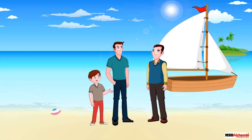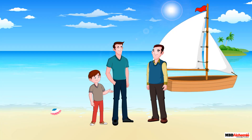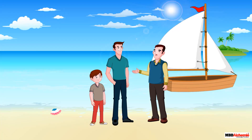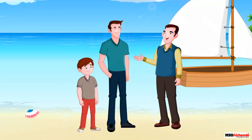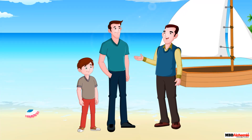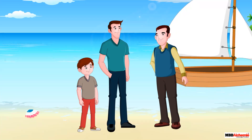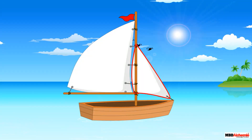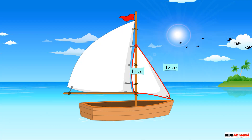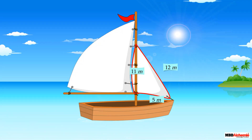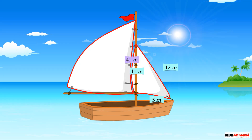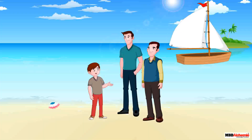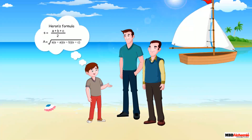Sid asks David to tell him the dimensions of the sails. David says that last year he had the sails serviced, and the dimensions are written on the bill. The dimensions for the smallest sail are 12 meters, 11 meters, and 5 meters. The dimensions for the larger sail are 41 meters, 44 meters, and 8 meters.